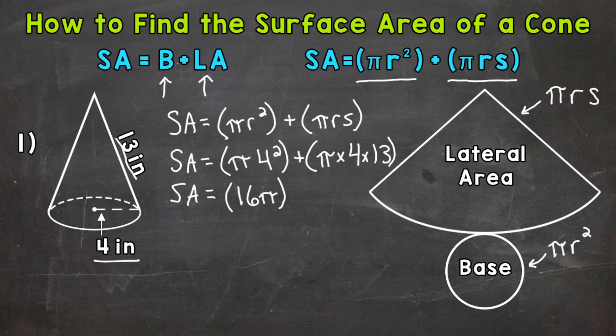Plus, 4 times 13 is going to give us 52. So in terms of pi for the lateral area, we're going to have 52 pi.